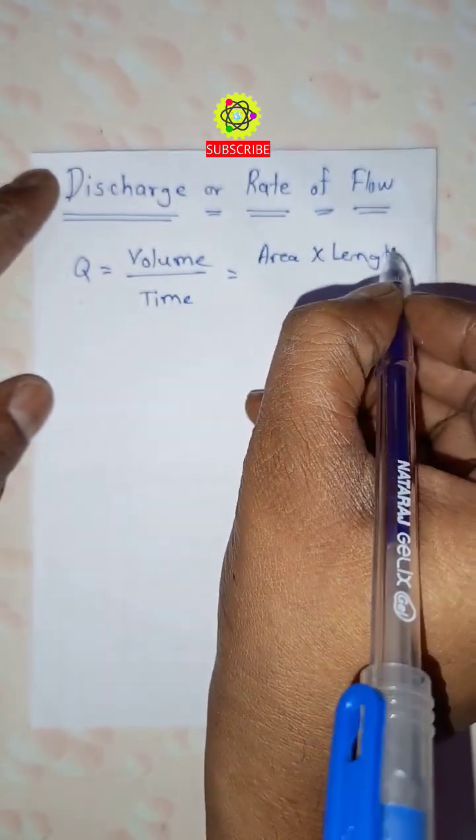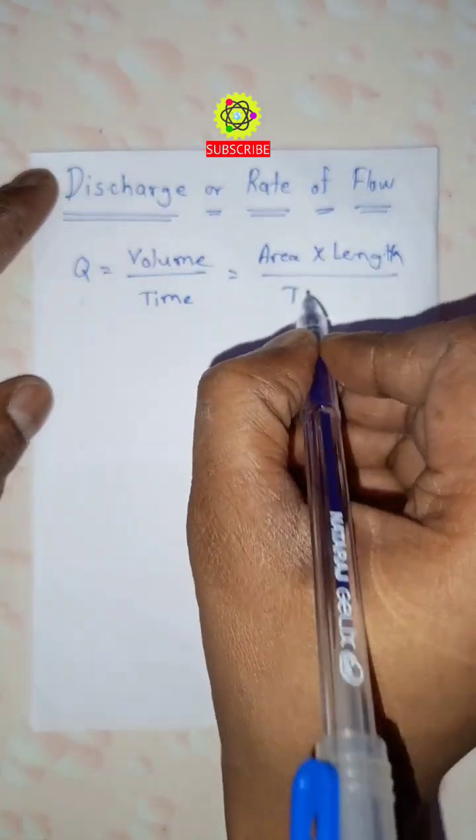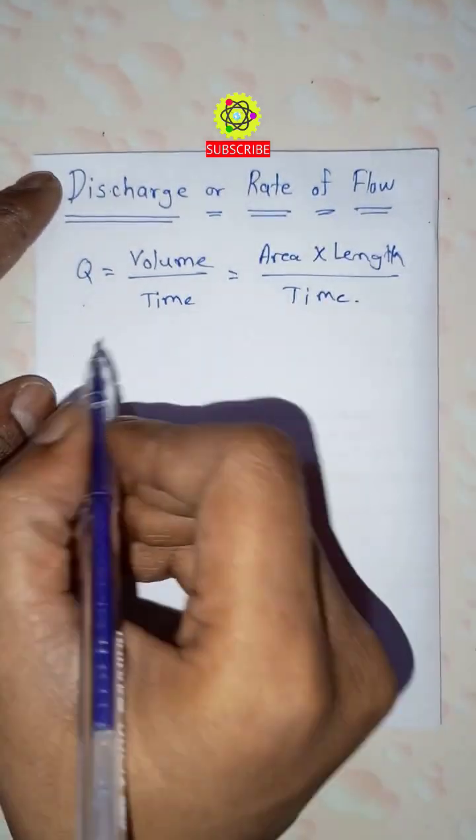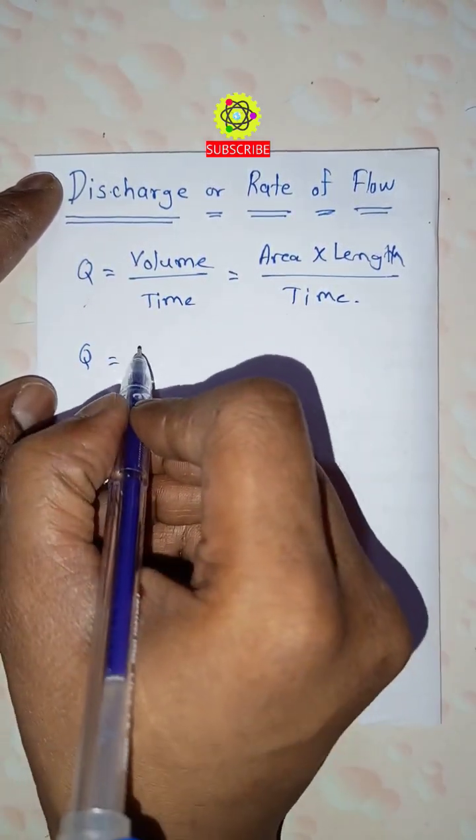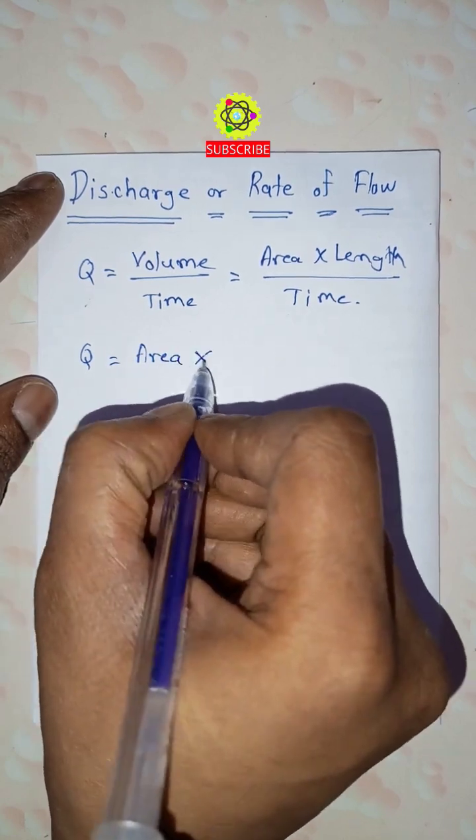So now we can again, this can be simplified as Q is equal to area into length upon time.